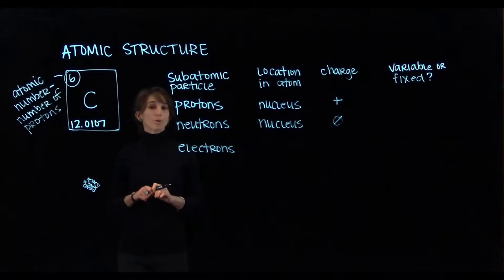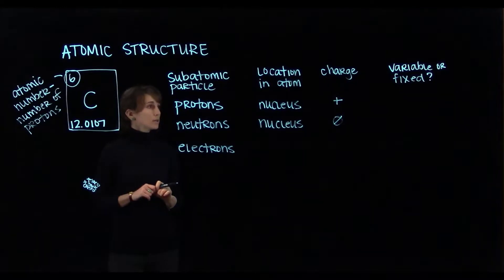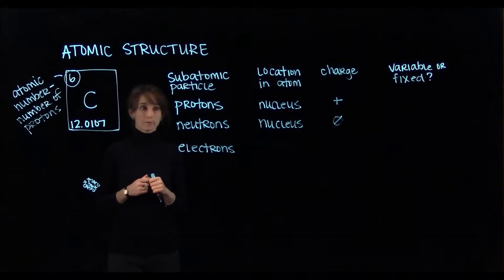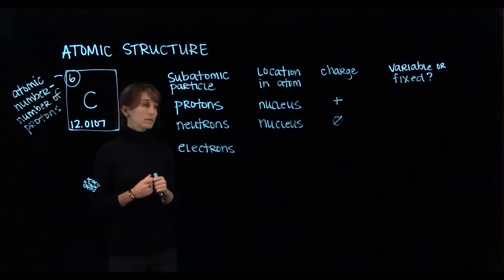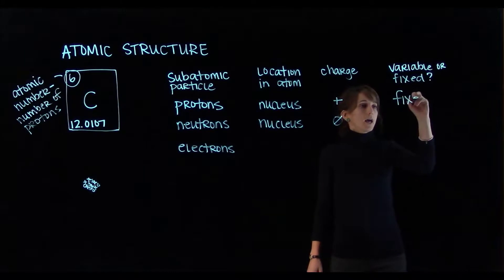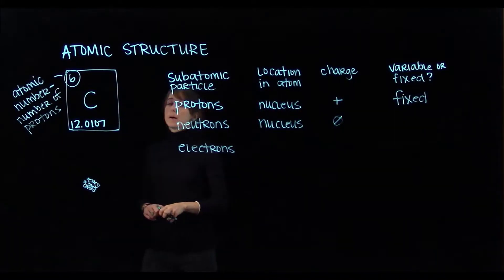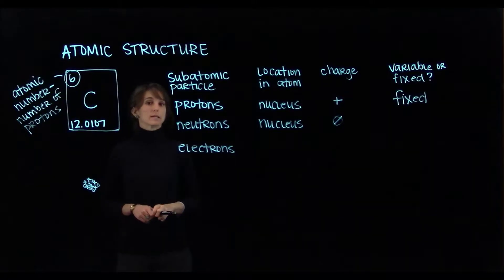But it's important to remember that the number of neutrons that an atom contains can and does vary. So in our table, the last column is for variable or fixed. The number of protons is fixed.